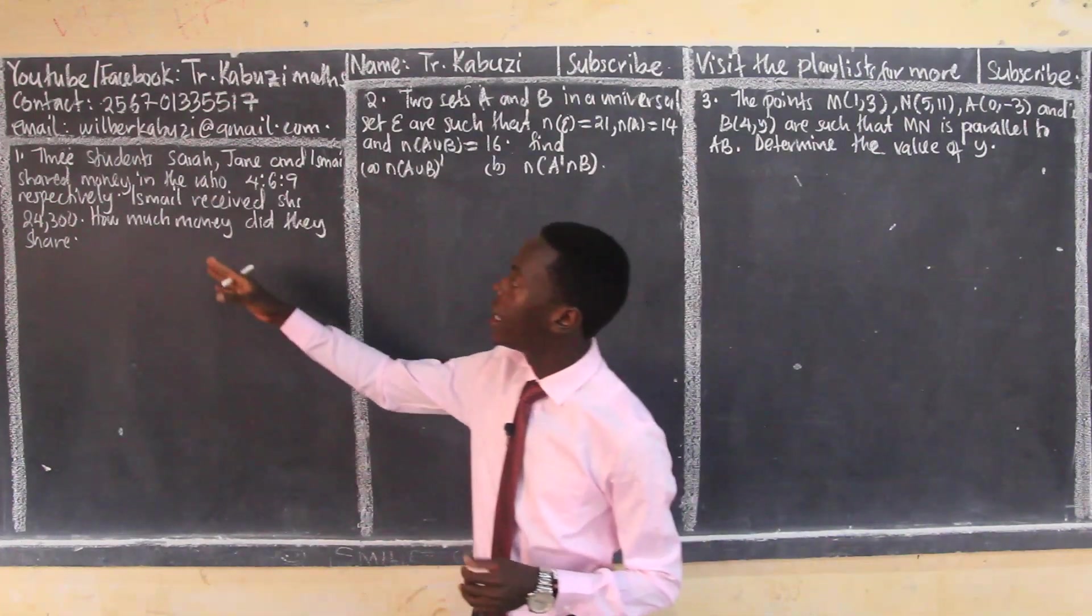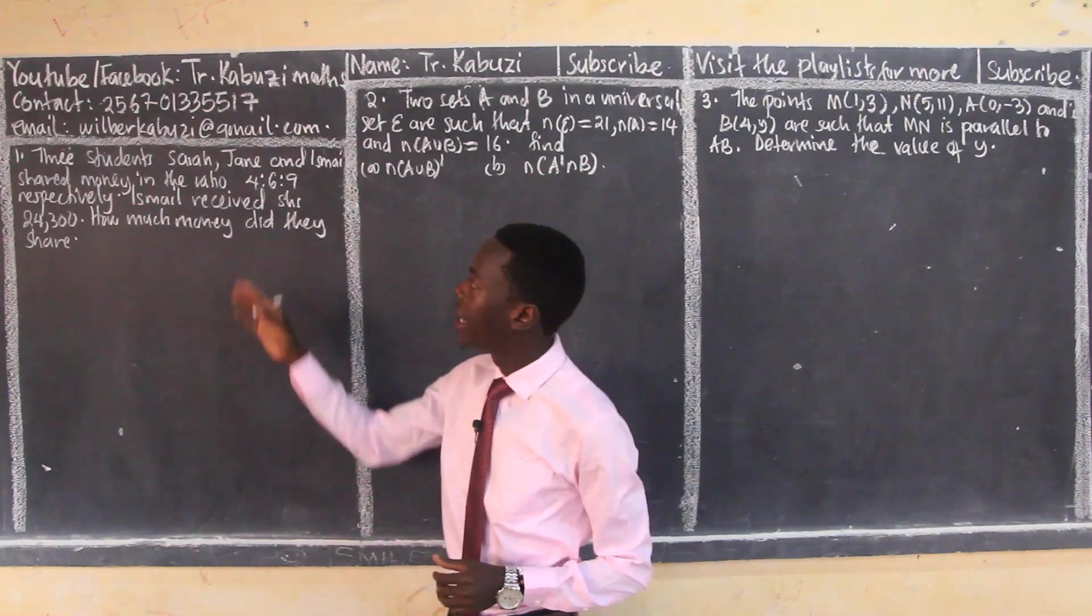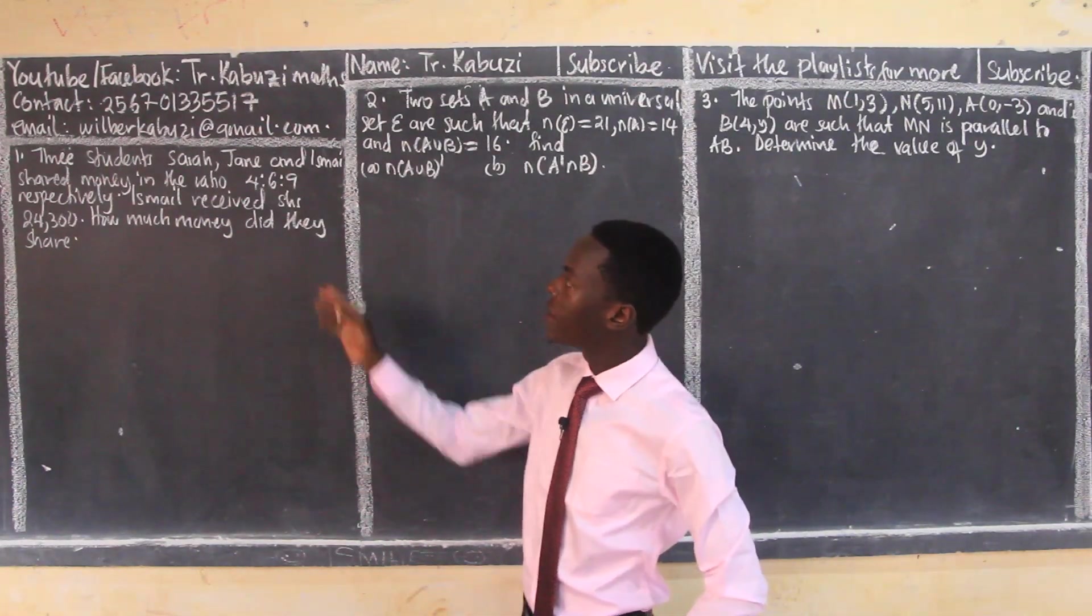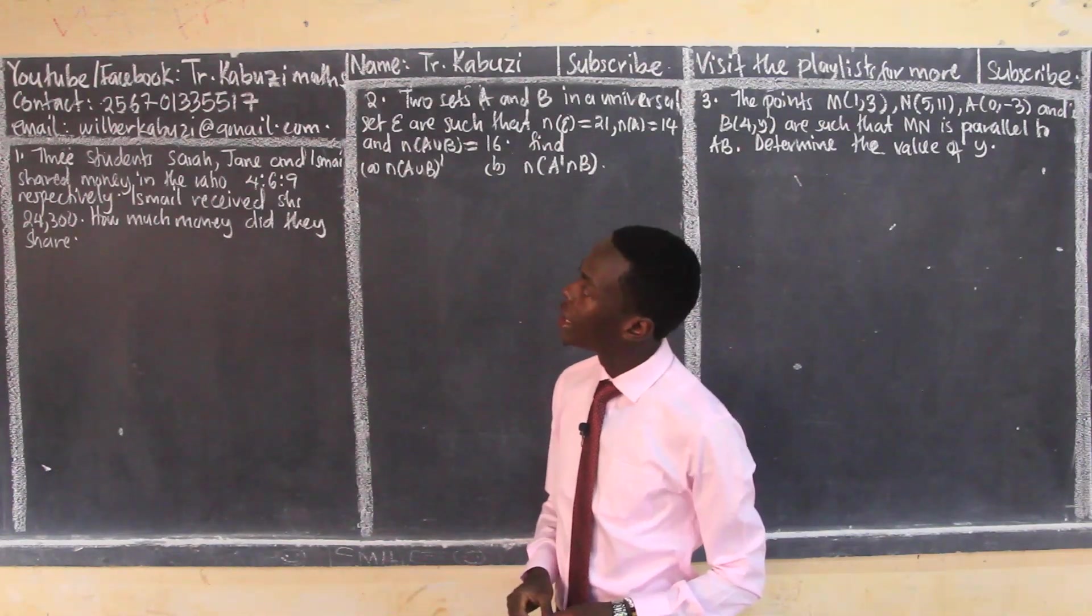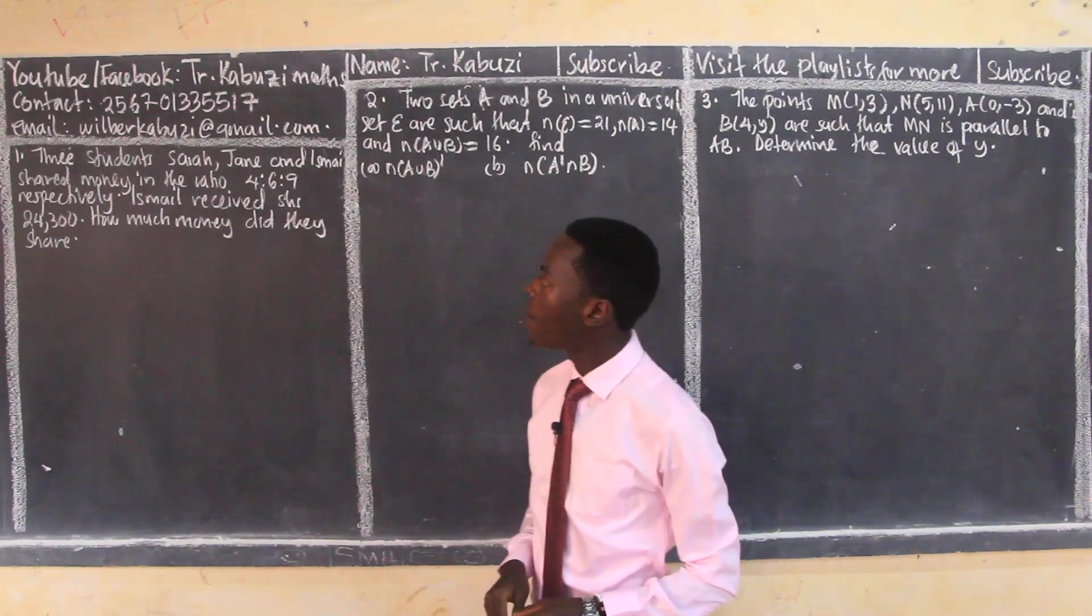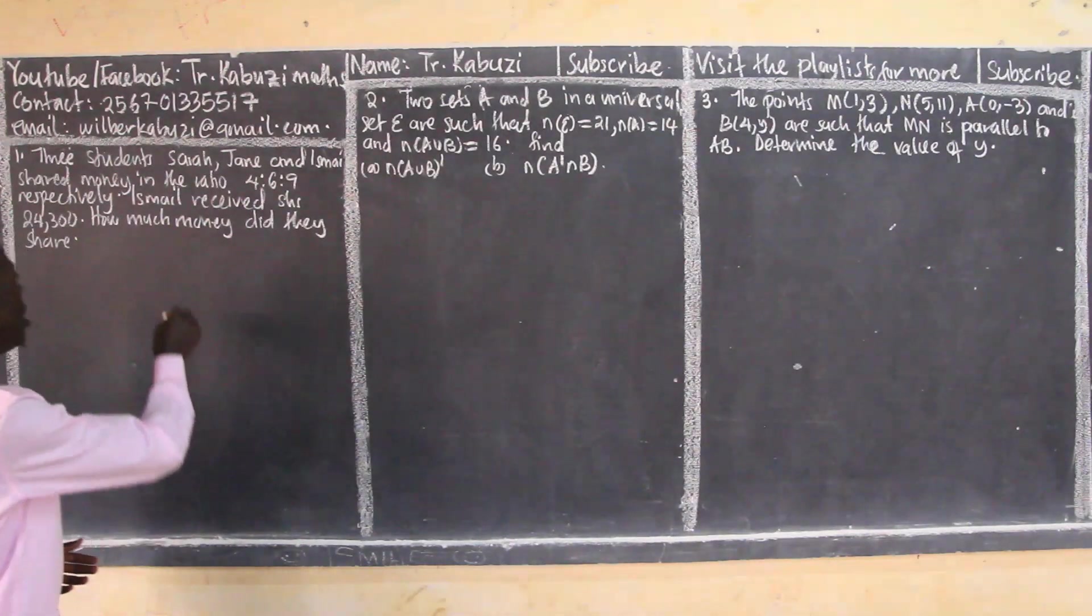Number one was coming from ratios. You can pause the video to read these questions properly. It says three students Sarah, Jane, and Isma shared money in the ratios respectively. Isma received these shillings. How much money did they share?